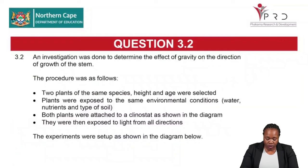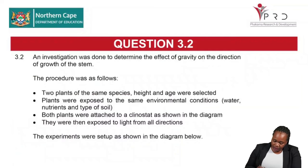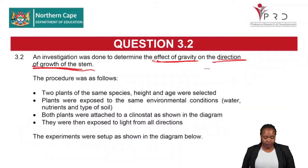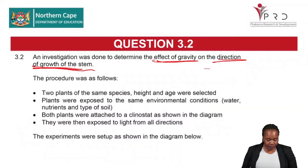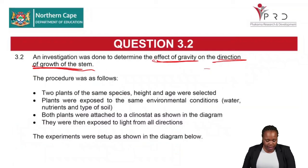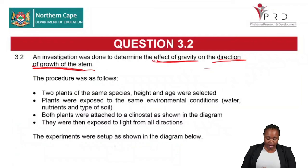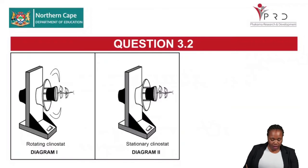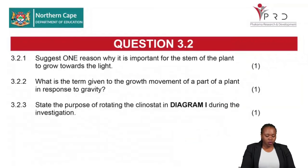Question 3.2 involves an investigation to determine the effect of gravity on the direction of growth of a stem. Two plants of the same species, height, and age were selected, exposed to the same environmental conditions — water, nutrients, and soil type. Both plants were attached to a clinostat and exposed to light from all directions. Diagram 1 shows the clinostat rotating, and Diagram 2 shows it stationary.